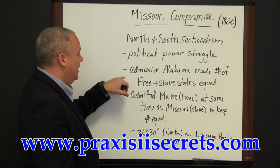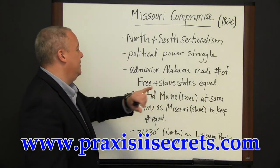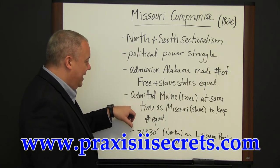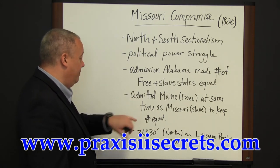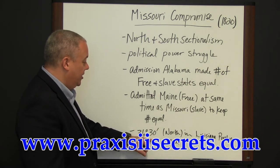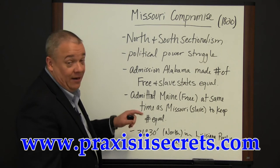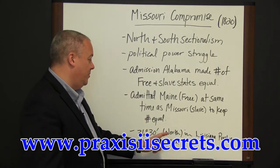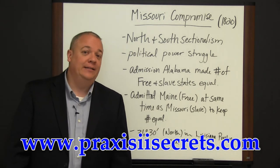It's part of a political power struggle: north-south sectionalism meant that the admission of Alabama made the number of free and slave states equal. They then admitted Maine as a free state at the same time as Missouri as a slave state to keep the numbers equal. This number is critical — 36 degrees 30 minutes being the boundary, with everything north of that and west of Missouri in the Louisiana Purchase considered forever free.